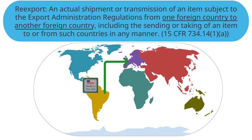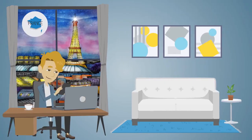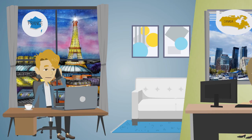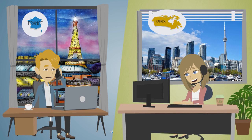The scene transitions to a male character, François, sitting at his desk in France with a view of the Eiffel Tower from his window. He calls his Canadian supplier, and a female character named Elsa answers the call via her headset. Elsa is sitting at her desk in Canada with a view of the CN Tower. François says: Bonjour Madame, je m'appelle François. I am calling to see if my field programmable gate array integrated circuit is ready to be shipped.